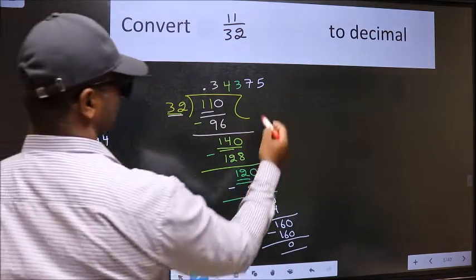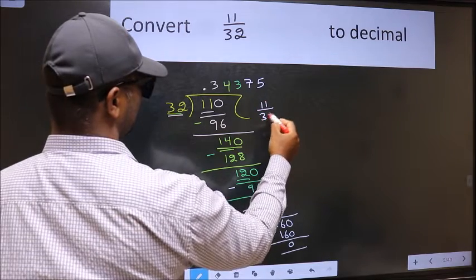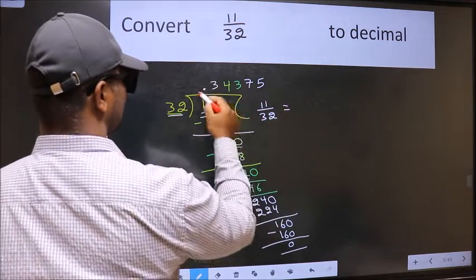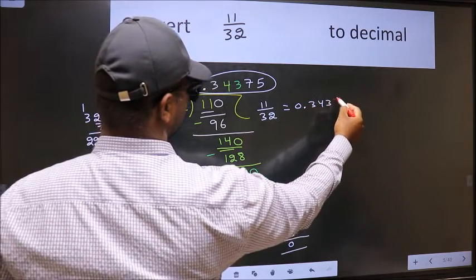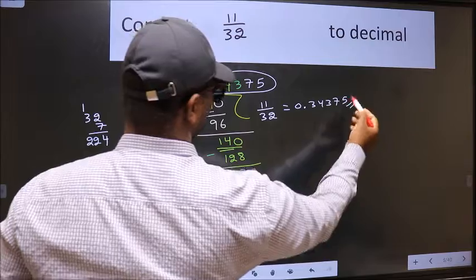Therefore, decimal of 11 by 32 is this one. 0.34375 is our answer.